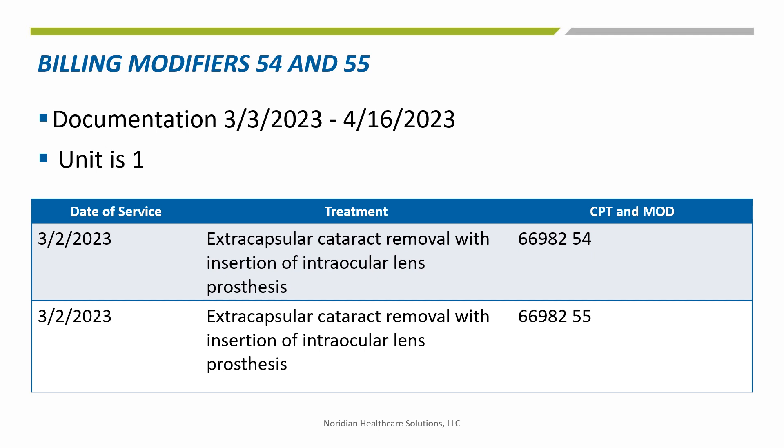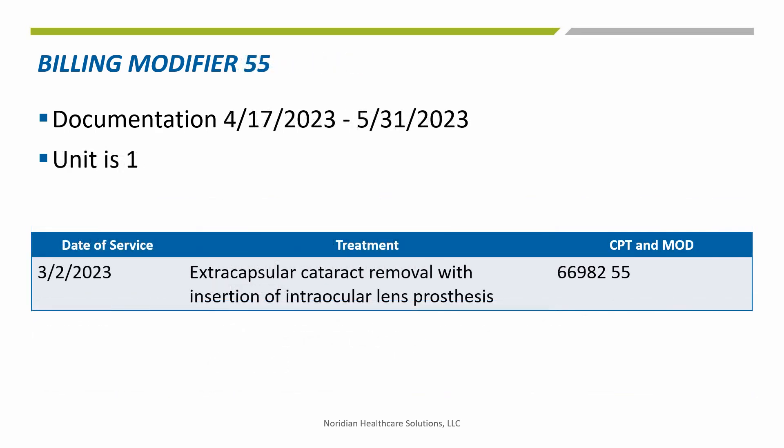Once again, the number of units is entered as one. This is what the other physician's claim will look like who assumed the postoperative care on the patient after 45 days. Again, the same date and the same surgical code is used. Item 19 is the date the provider assumed care through the end of the global period. Once again, the number of units is one.